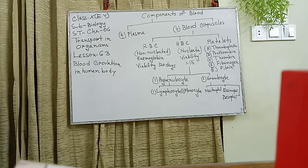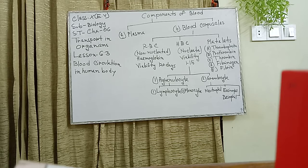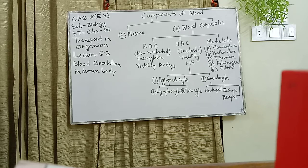Hemoglobin is a type of colored pigment. Blood appears red because of its presence in red blood cells. If the number of red blood corpuscles is not adequate, then symptoms of anemia are noticed. In Bangladesh, almost two-thirds of the population suffer from this disease. To get rid of this disease, it is necessary to take a balanced diet.